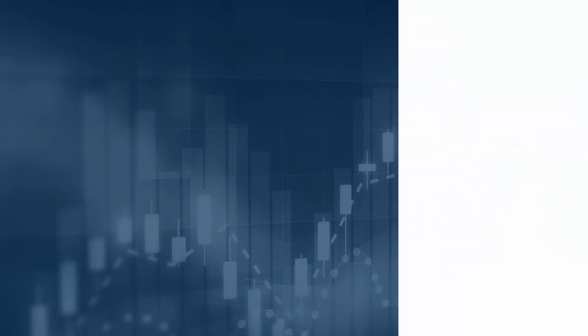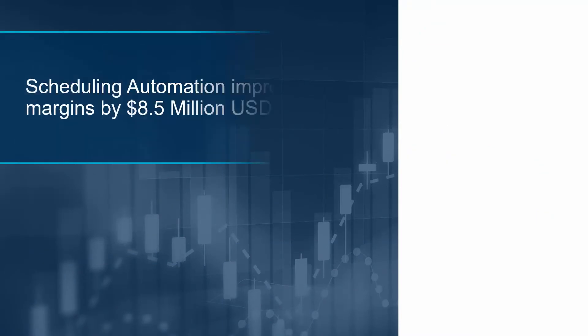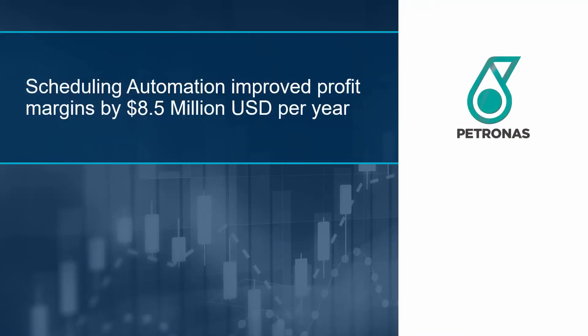Trusted by companies all over the world, Aspen Petroleum Scheduler is being used to create efficient and feasible schedules. Petronas achieved $8.5 million per year in profit after implementing Aspen Petroleum Scheduler in their Malacca refinery.